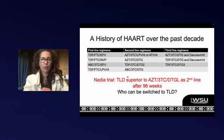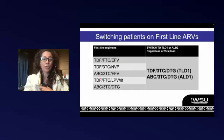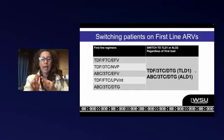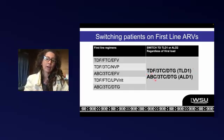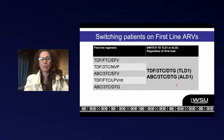Suddenly we were re-looking at all these regimens and going: TLD is easier to take, not very many side effects, a very robust drug, difficult to get resistance to — which of our patients now qualify to be put onto TLD? All patients on old first-line regimens qualify to go onto TLD1 if they're more than 10 years old, more than 30 kilograms, and the eGFR is over 50. If eGFR is not over 50, or under 30kg, or under 10 years of age, we use abacavir-based ALD1. We've added numbers to differentiate first-line versus second-line use.